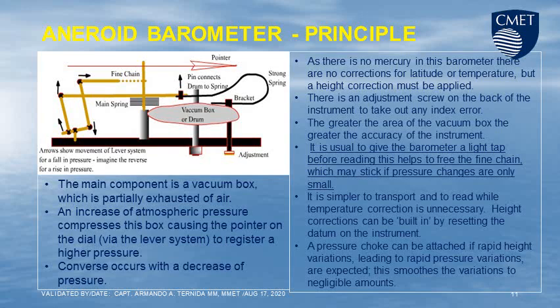The main component of the aneroid barometer is a vacuum box, which is partially exhausted of air. An increase of atmospheric pressure compresses this box, causing the pointer on the dial via the lever system to register a higher pressure. The converse occurs with a decrease of pressure. As there is no mercury in this barometer, there are no corrections for latitude or temperature, but a height correction must be applied. There is an adjustment screw on the back of the instrument to take out any index error.